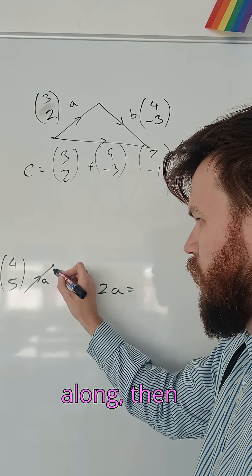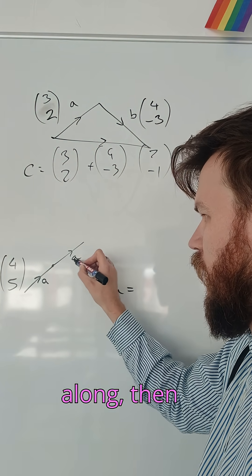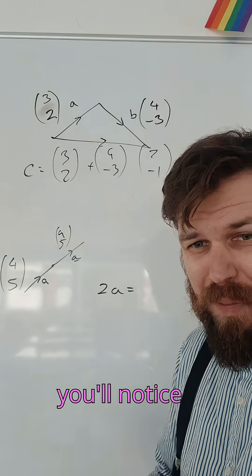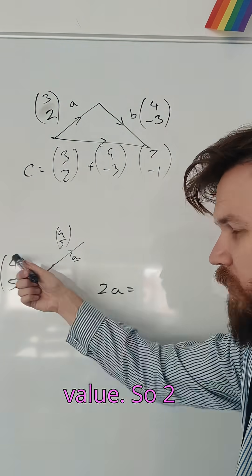Well it would be four along then five up and then four along then five up again. So it would be four here and five here. Same thing. I would add them along but you'll notice I could just double this value.